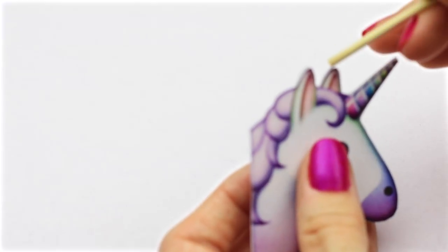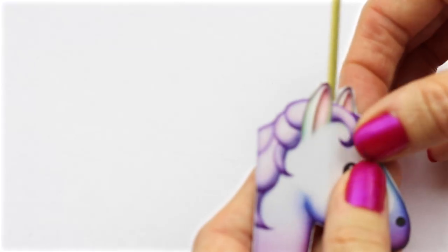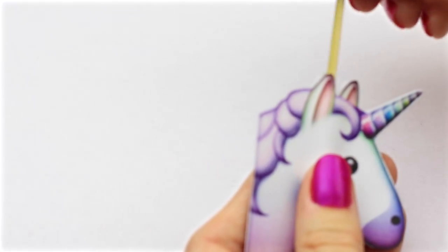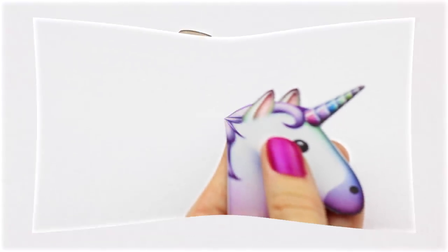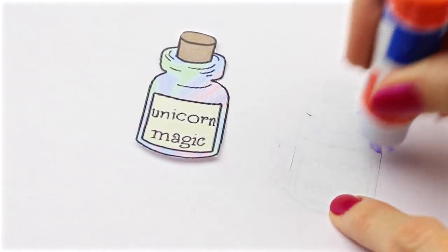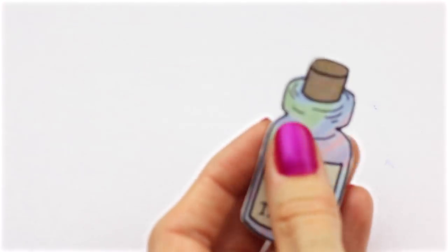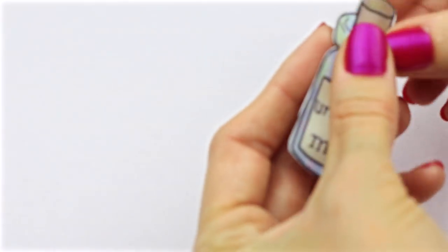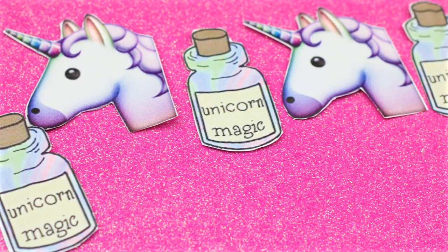I placed a toothpick in the center that was still open just to make sure that nothing was glued together. I just repeated that same process for the unicorn magic bottles. And here are all of mine once they were glued together and dried.